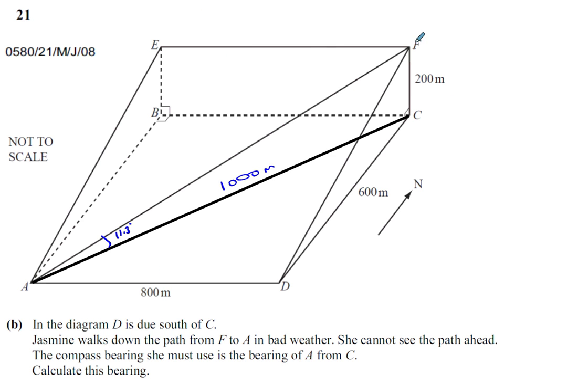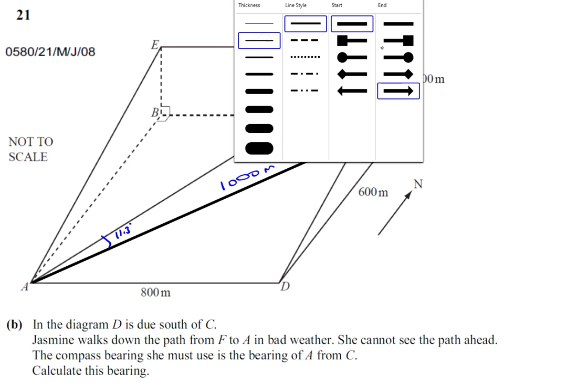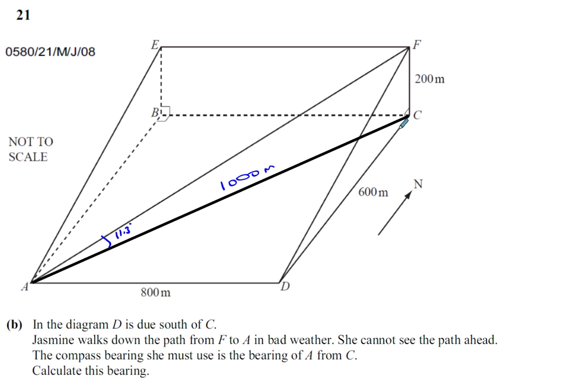The north line is not going to be similar to the type of north lines we normally draw. The north line here is going to be parallel to DC. So this is going to be the north line going straight up like this. That's the north line.